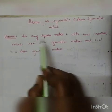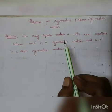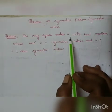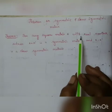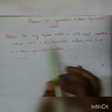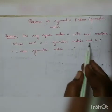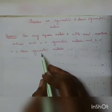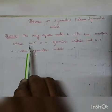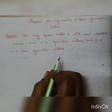Theorem number 1. For any square matrix A — note that for symmetric and skew symmetric, the first condition is that it should be a square matrix. So for any square matrix A with real number entries, A plus A transpose is a symmetric matrix and A minus A transpose is a skew symmetric matrix.